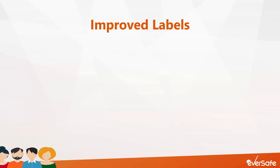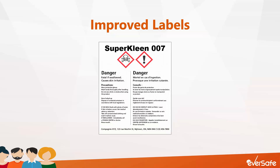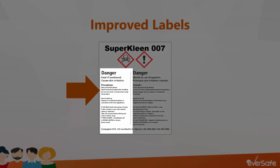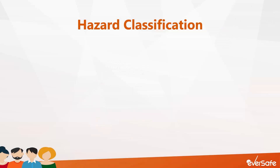In lesson two, we learned that Canada's adoption of GHS into WHMIS resulted in requirements that are ultimately improving labels. The new labels are required to display several bits of information that give users details about the hazards associated with the product. So how are hazards classified anyways?